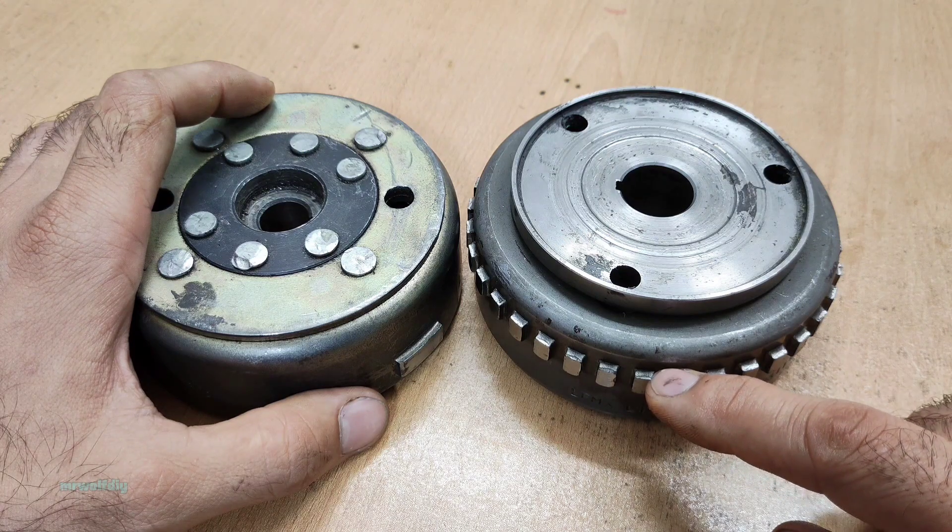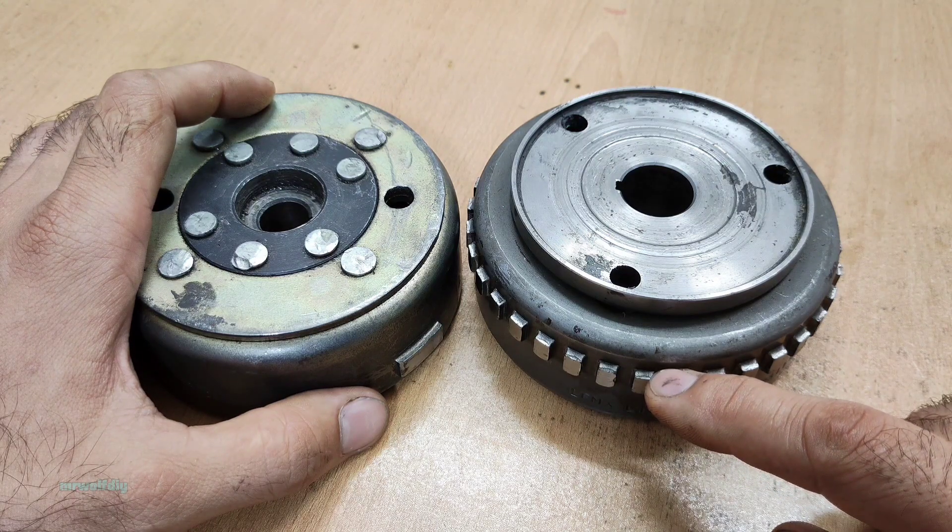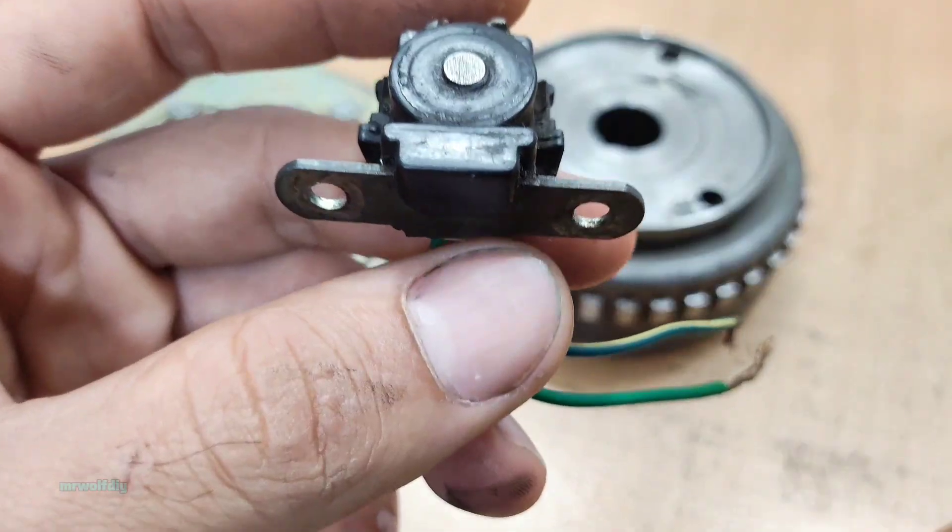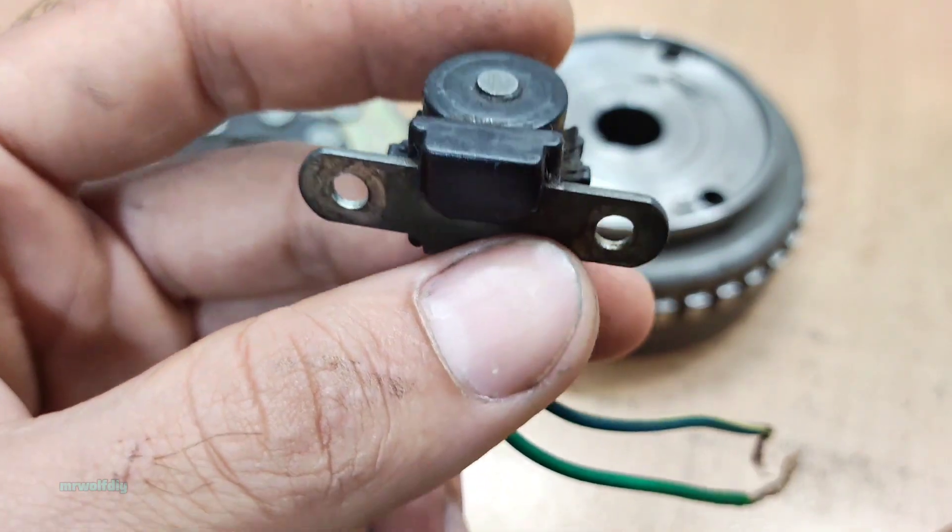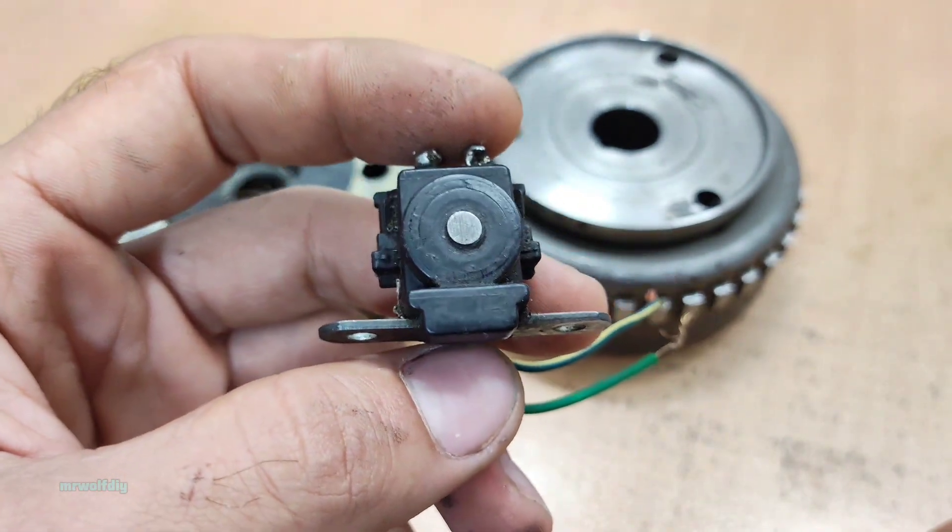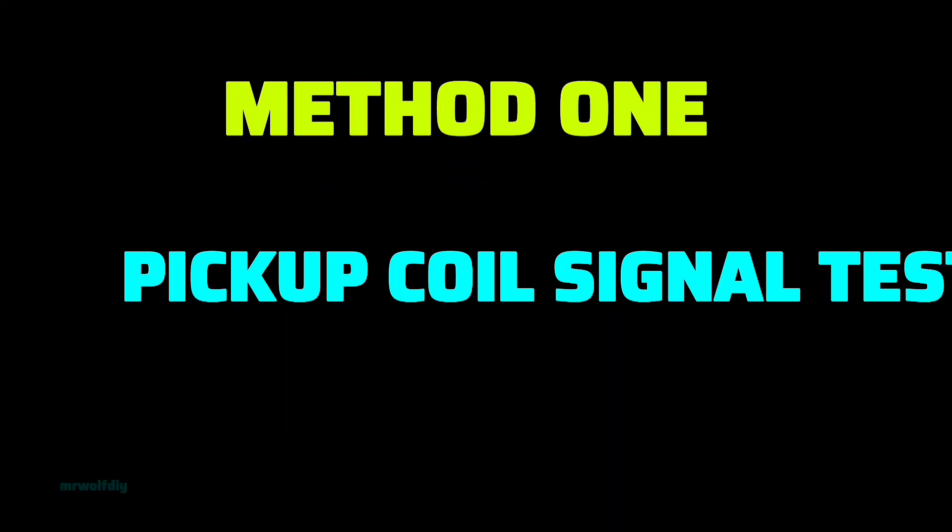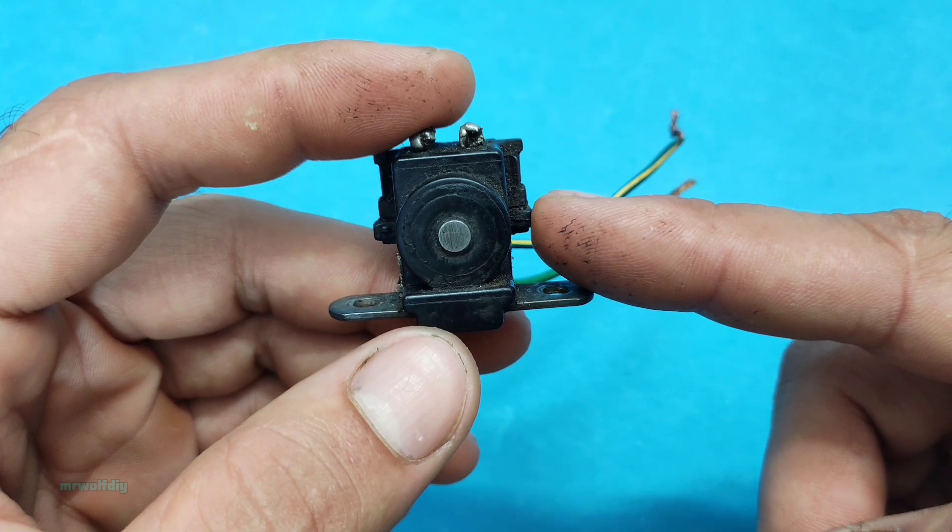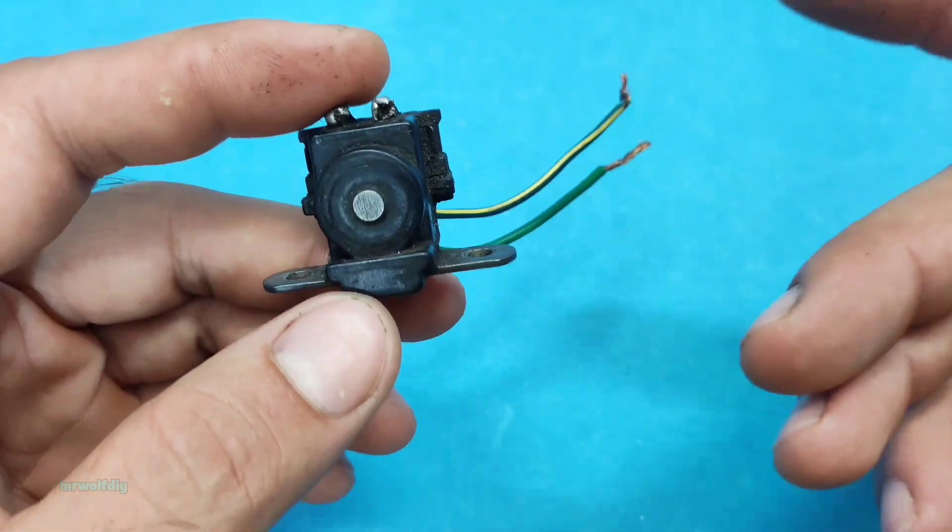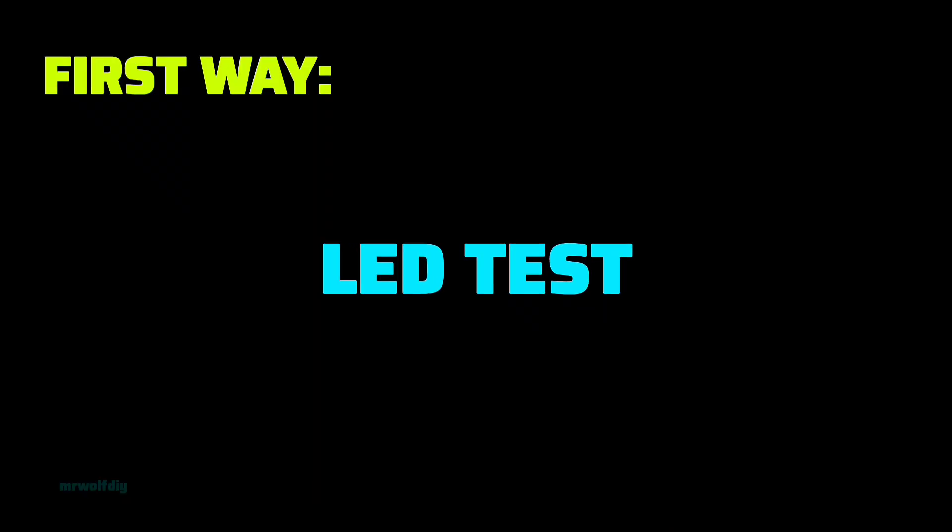This tells when the spark should happen. It's very easy to check if the pickup is making a signal or not. Let's show you. Method one, the pickup signal test. There are two ways to check the pickup signal. First way, LED test.